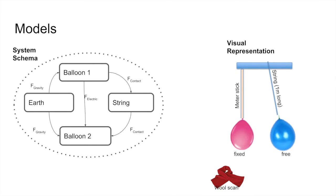In this section, we see the models that were used during our experiment. On the left-hand side, we have our system schema. We can see the Earth's gravitational force acting on balloons 1 and 2, the electrical force of balloon 1 acting onto balloon 2, and then we also see how the string's forces were acting on balloon 2. On the right-hand side, we see a visual representation of the model we created, and that was explained in our experimentation prior.